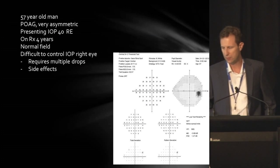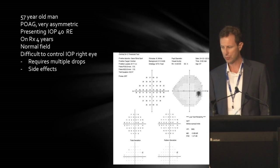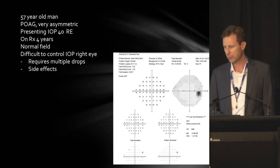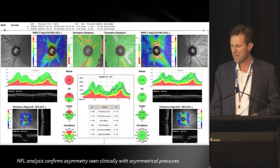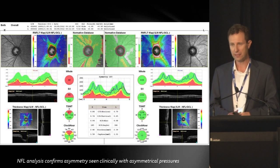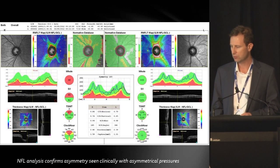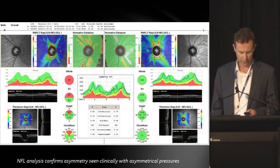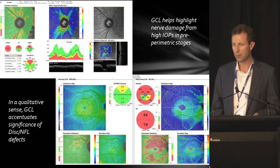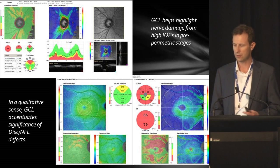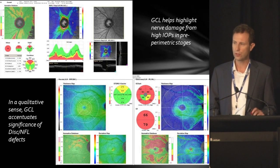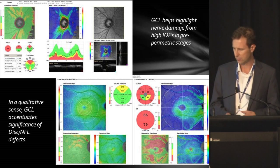This next case is a 57-year-old man with primary open-angle glaucoma but very asymmetric pressures, with high pressures in the right eye. He's been on treatment for four years, still has a normal field, has had difficult-to-control pressure, and has required multiple drops with experienced side effects. The disc nerve fibre layer imaging shows the asymmetry between the right and left eyes. The right, which is the more affected eye, is only borderline in some of the nerve fibre defects. But combining this with the ganglion cell analysis, there's quite extensive dropout in the right macular area, helping to highlight in a qualitative sense these defects - they can be more magnified when we image the ganglion cell region.